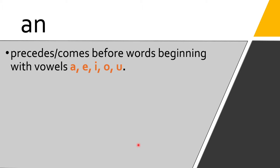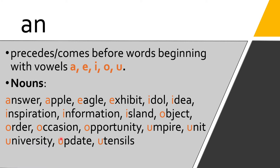We have five vowel letters, but when we talk about the vowel sounds it's not only five — it's more than five. Examples of nouns beginning with vowel letters — read this with me: apple, eagle, exhibit, idol, idea, inspiration, information, island, object, order, occasion, opportunity, umpire, unit, university, update, utensils, and a whole lot more.